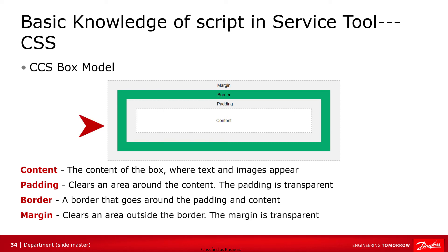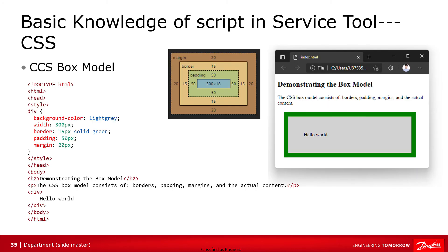The CSS box model is essentially a box that wraps around every HTML element. It consists of margin, border, padding, and content. This image illustrates the box model very well. Here is the example. We define a division in HTML. In the style sheet, we set its background color to light gray, width to 300 pixels, border width to 15 pixels, solid line, and green color. We set the padding to 15 pixels, and margin to 20 pixels. You can check it in design mode by pressing key F12 in the browser.